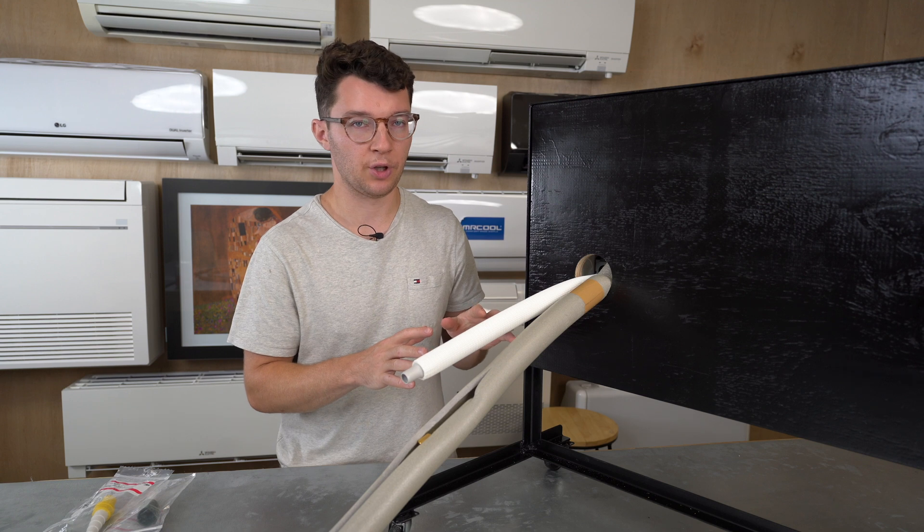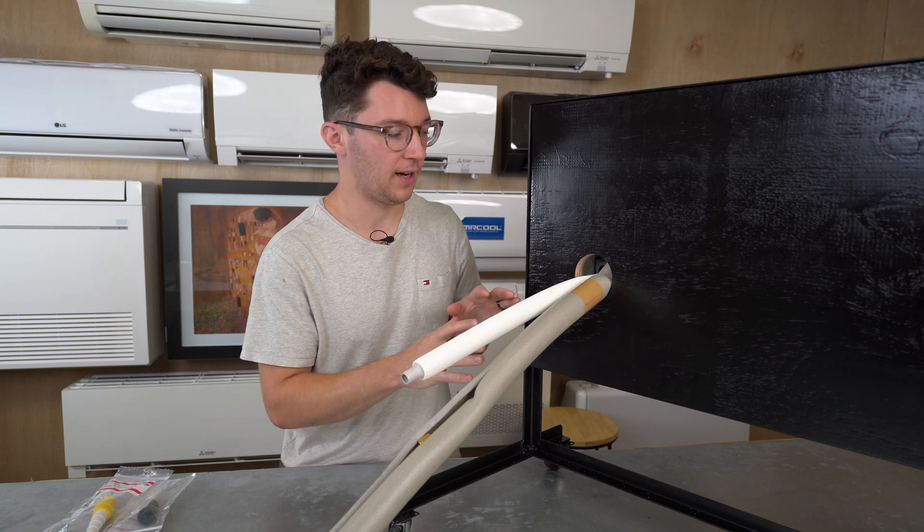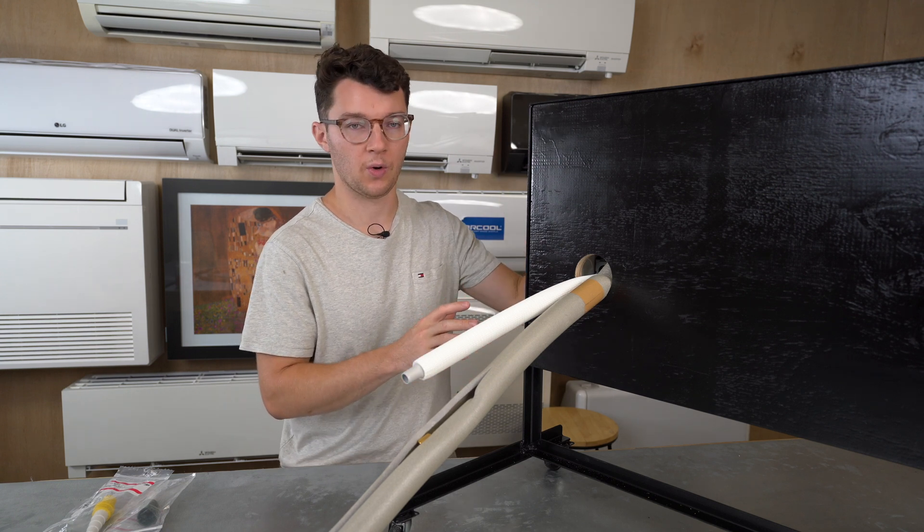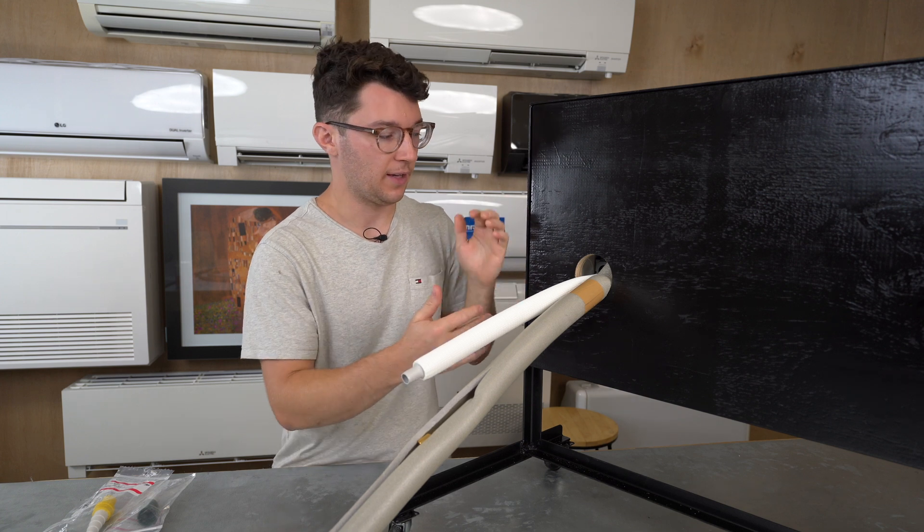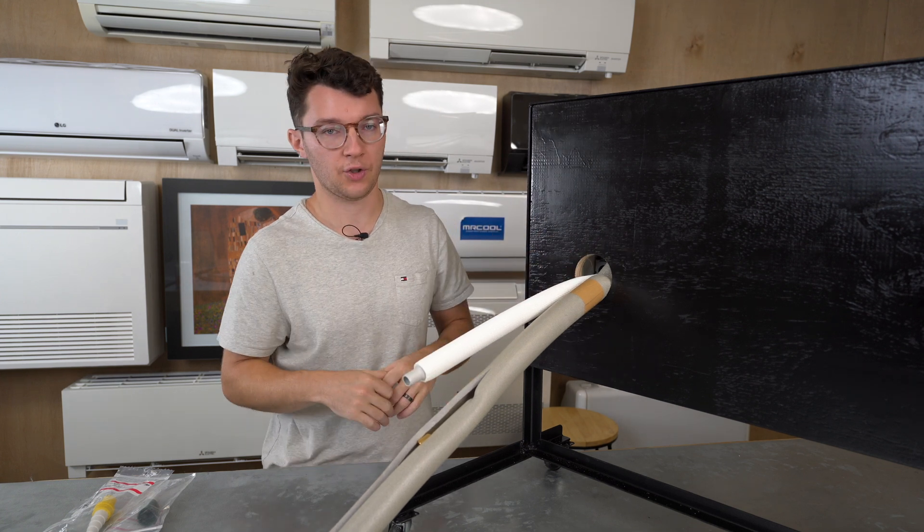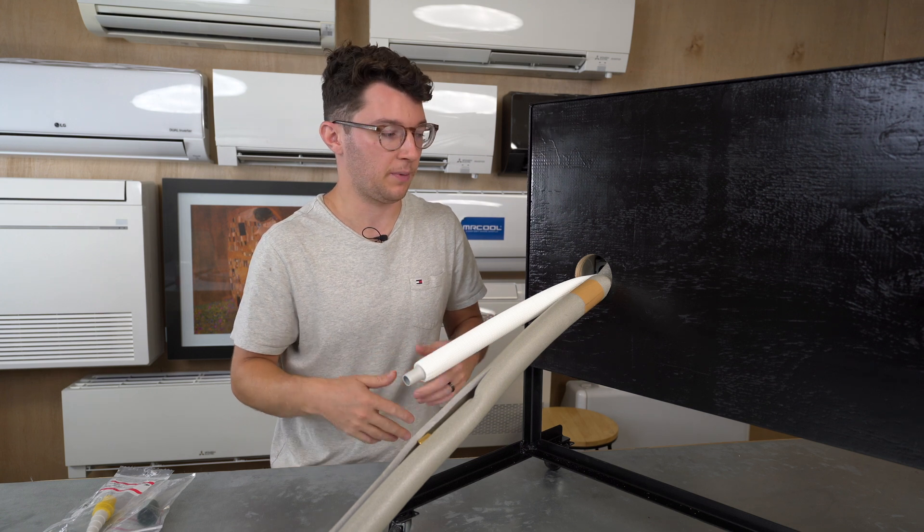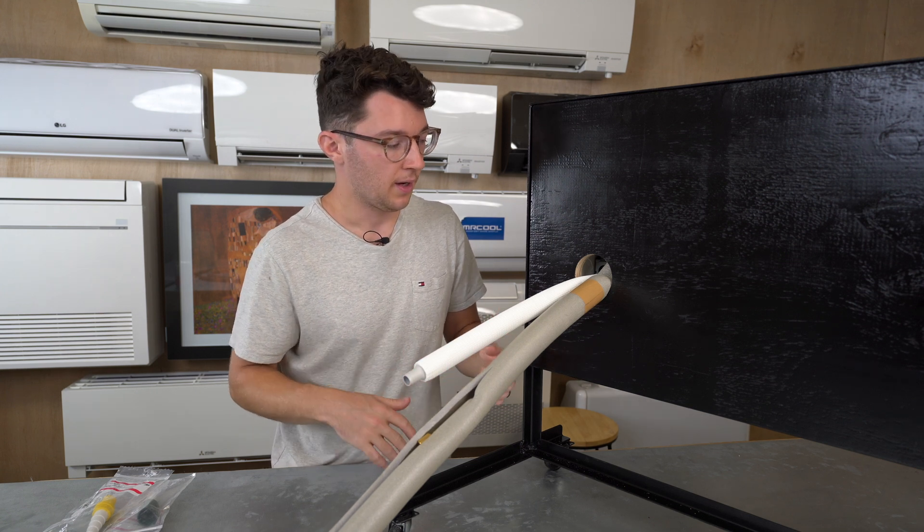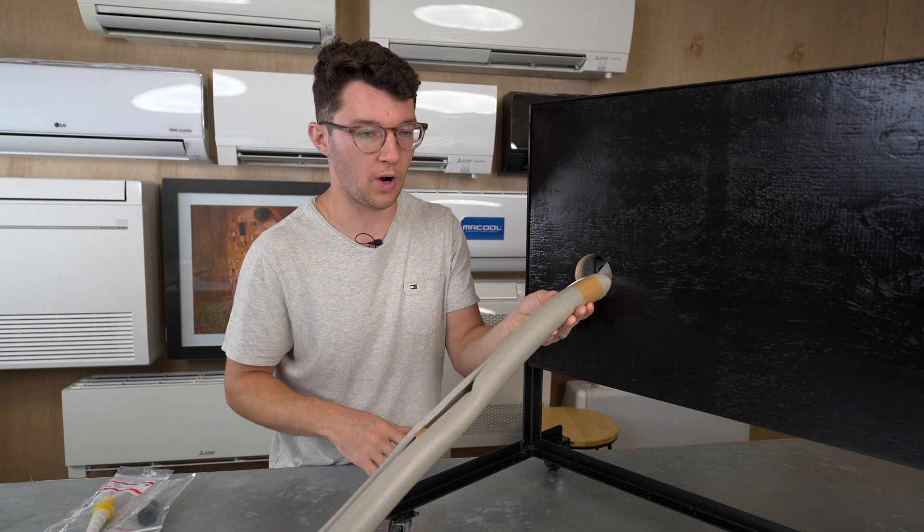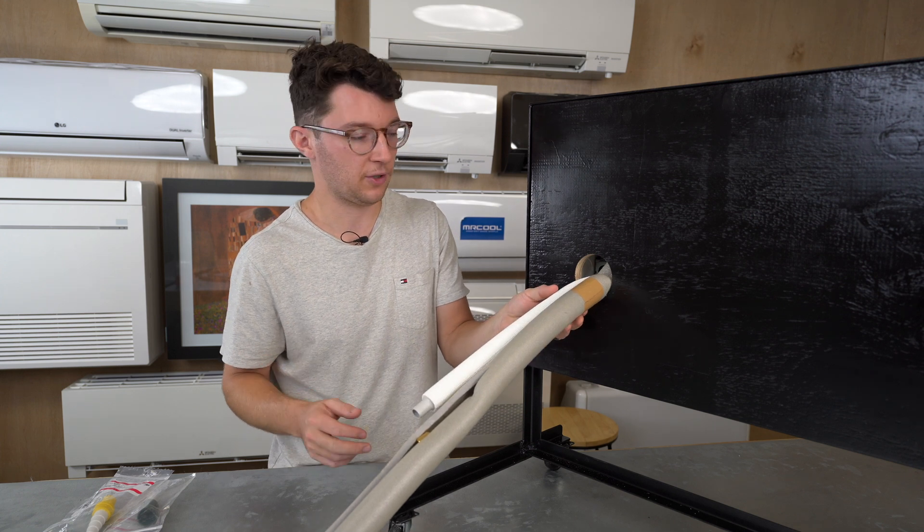This is what the system looks like after installation. When you drill your two and a half inch or three inch hole—typically for Mitsubishi it's two and a half, but for other manufacturers it might be three—it comes through the wall like this. All ductless manufacturers do the same thing.